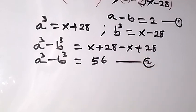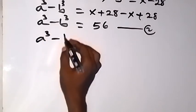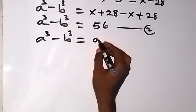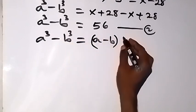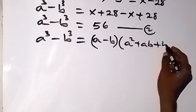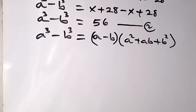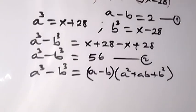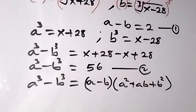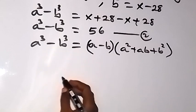Then we should recall from an identity that when we have a cubed minus b cubed, this can be written as a minus b, multiplied by a squared plus ab plus b squared. And from there we can substitute what we have already from equation 1 and 2. We have a minus b from equation 1 to be 2, and we have a cubed minus b cubed. So a cubed minus b cubed here we can put it as 56.